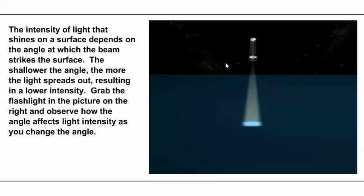One of the objectives from our lesson is to understand the role of the changing sun angle and the tilt of the Earth on its axis, and the roles that those play in the changing of the seasons. To look at that, we're going to start with a virtual flashlight.